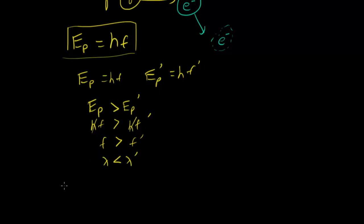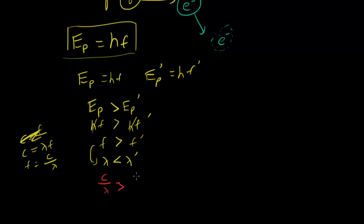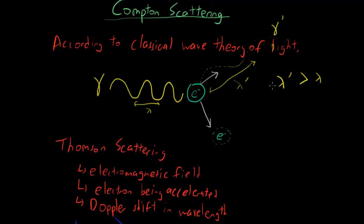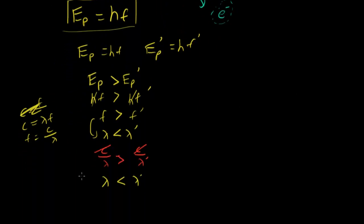We can rearrange this using the universal wave equation: the speed of light c equals lambda times frequency, so frequency equals c over lambda. Substituting in, c over lambda is greater than c over lambda prime. Since c cancels out, rearranging and flipping the inequality gives us lambda is less than lambda prime — the wavelength before is less than the wavelength after.